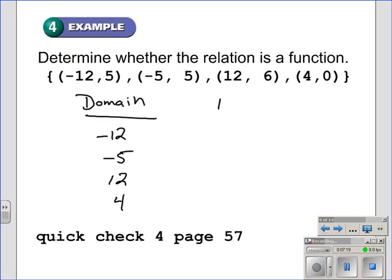We list off the range values, then. The range values are 5, 6, and 0. So, 0, 5, and 6.